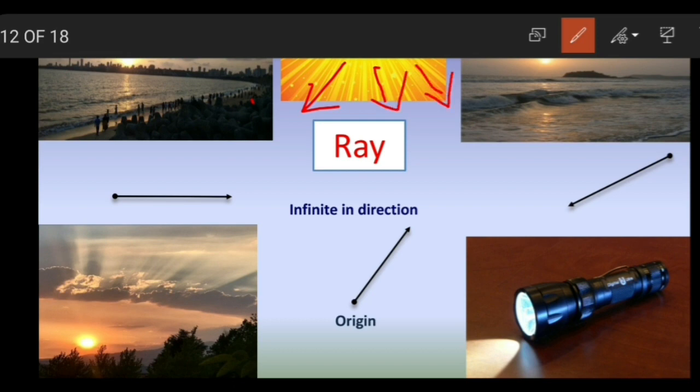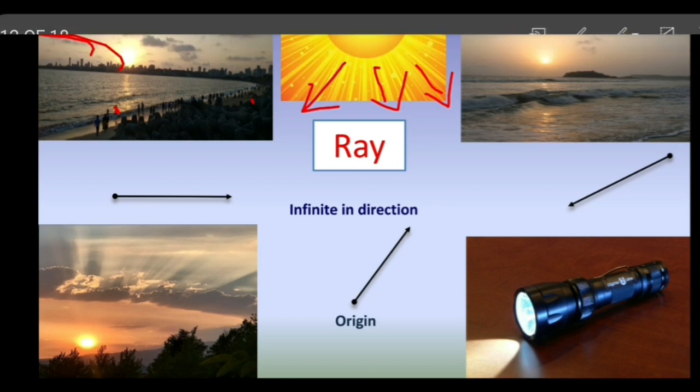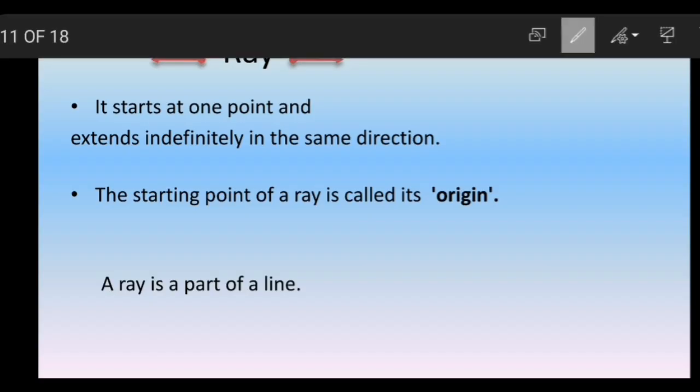That is why light coming from the sun is called sun rays. You can see here another example: light rays from a torch also start from a point and go forward continuously in one direction. Let us know more about rays.